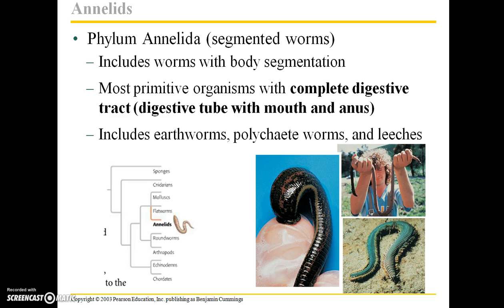Phylum Annelida is comprised of the segmented worms — worms with true body segmentation. Earthworms are a common example of an annelid. These are the most primitive organisms with a complete digestive tract, and it includes earthworms, polychaete worms which are a marine species, as well as leeches.